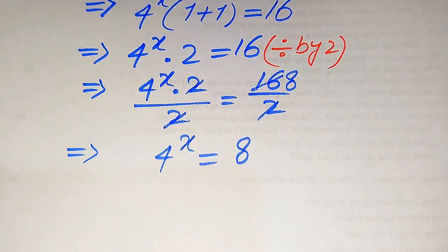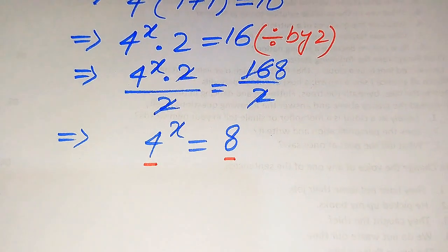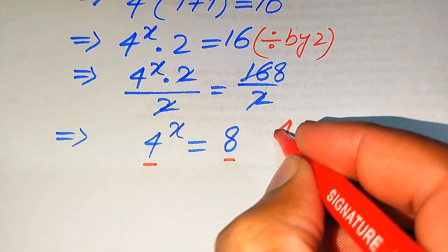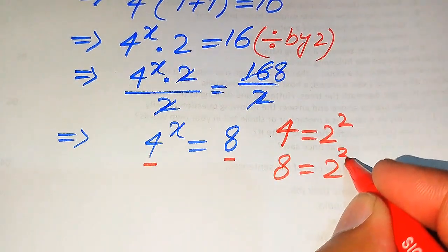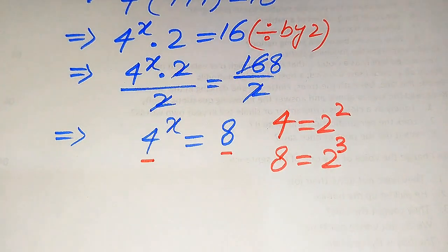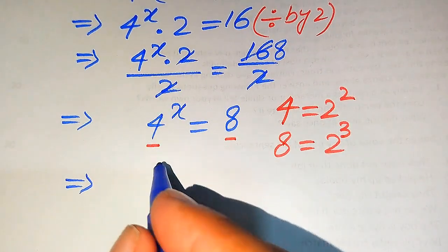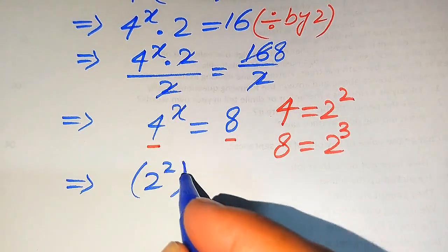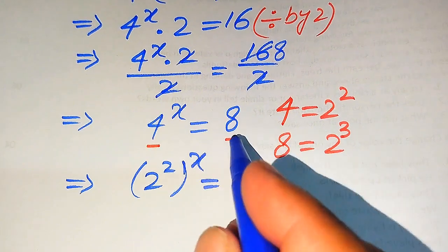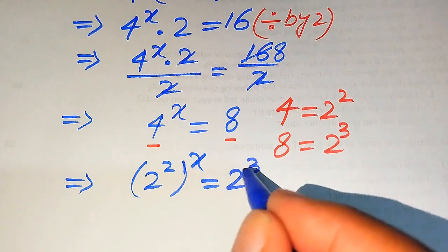To find the values of x, we need to write the base of each term in prime factor form. The prime factors of 4 are 2 squared, and the prime factors of 8 are 2 cubed. We replace these values on both sides: 4 to the power of x becomes (2 squared) to the power of x, equals 2 cubed.